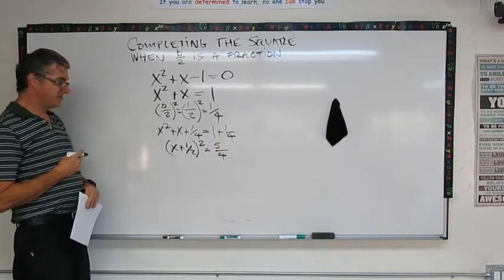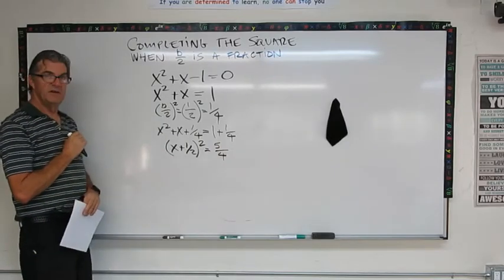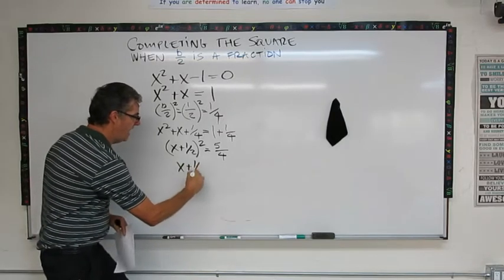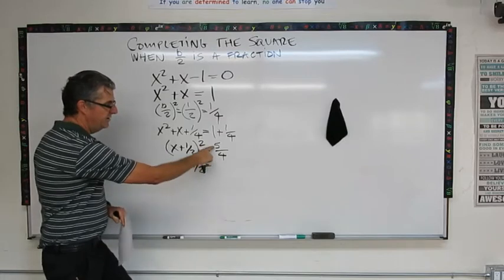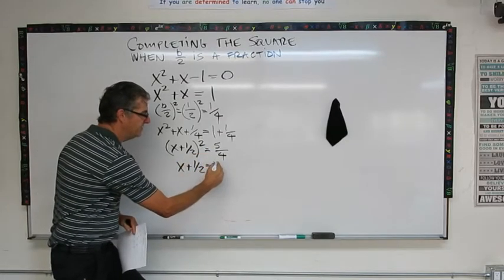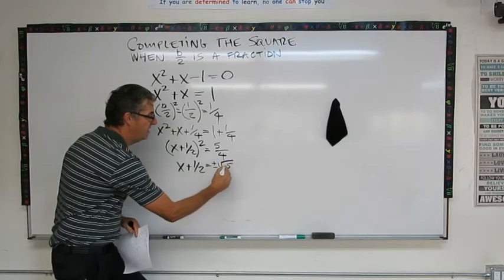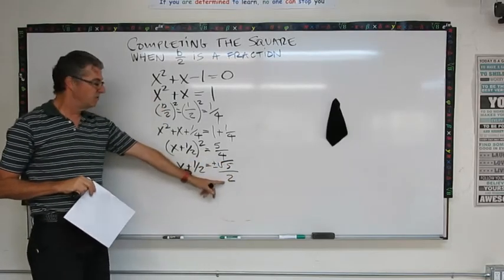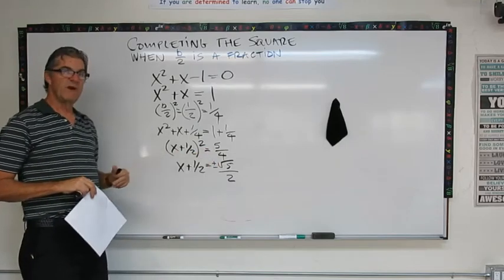Now let's solve. We need to get x alone. So we take the square root of both sides. We get x plus 1 half equals the square root of 5 over the square root of 4, which ends up being plus minus root 5 over 2, because we can take the square root of 4, that's just 2. Root 5 we're going to leave in the radical form.